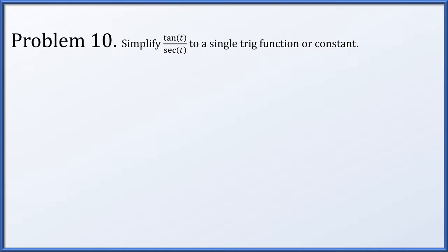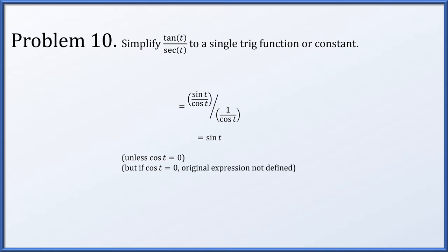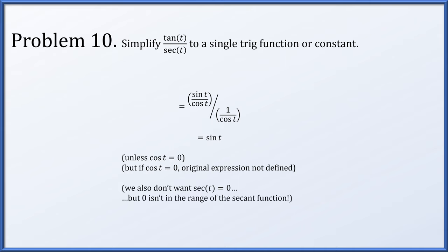In problem 10, we're going to simplify the tangent of t divided by the secant of t to a single trigonometric function or constant. My default in problems like this is usually to replace everything in terms of sines and cosines — it gives us fewer moving parts. So the tangent is sin(t)/cos(t) and secant is 1/cos(t). We have a shared denominator of cosine which we cancel out, leaving behind sine(t) over 1. However, if the cosine of t were 0, the secant wouldn't exist in our original expression, and 0 isn't in the range of the secant function anyway, so that's not a problem.